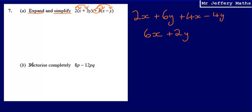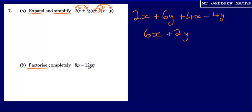Part B — I'm asked to factorize completely: 8p minus 12pq. This word factorize just means to put this expression back into brackets. We can think of this as almost being the reverse of expanding.